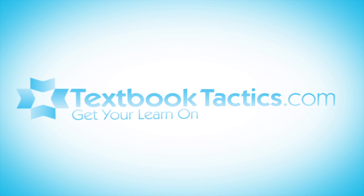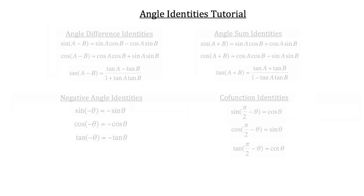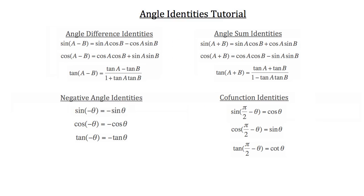This is the angle identities tutorial. In trigonometry there are quite a few angle identities with several subcategories: angle difference identities, angle sum identities, negative angle identities, and cofunction identities.